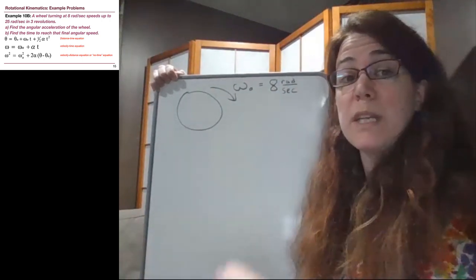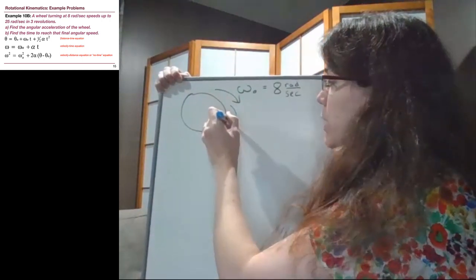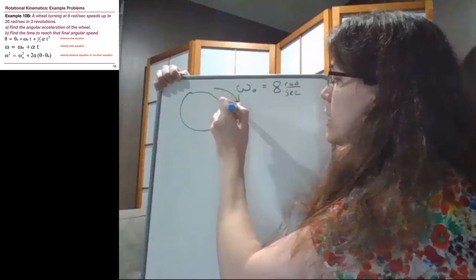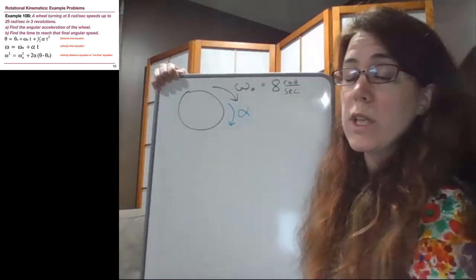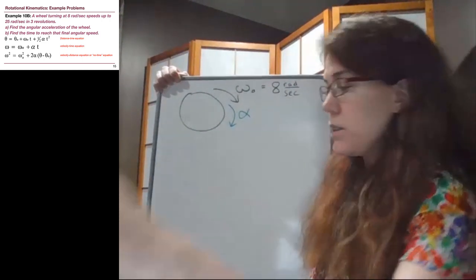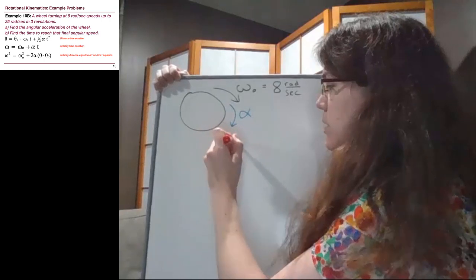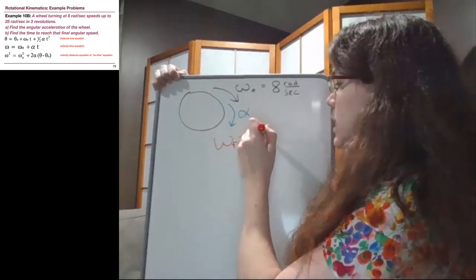We're told that it speeds up. Speeding up means that alpha is going to be pointing in the same direction, so when we calculate it we expect it to be positive. We're told that the final state of the problem is that the final omega equals 25 radians per second.